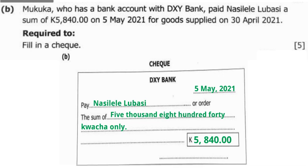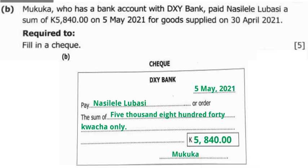This is the cheque you have prepared. Mukuka is the one who has prepared it and he is the one who is paying. So we write the name Mukuka there, because he is the one who has prepared the cheque and he is the one who is paying.